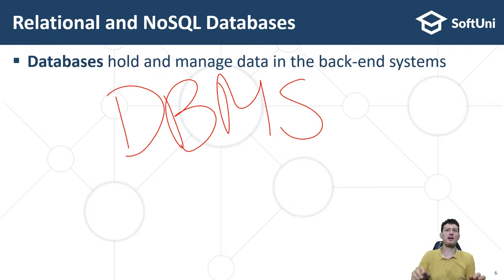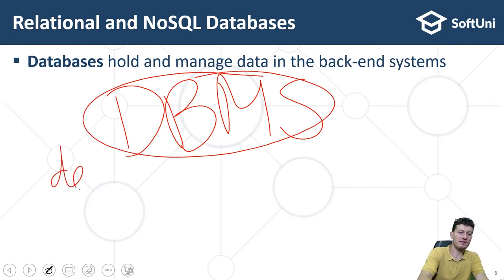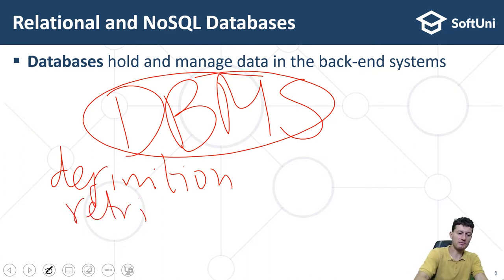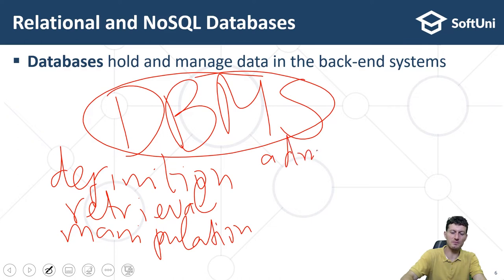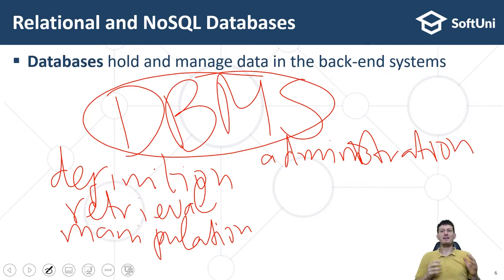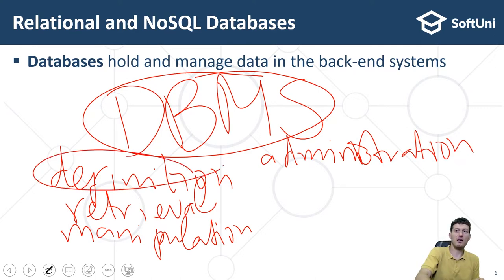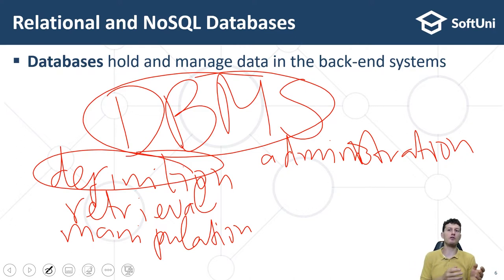DBMS systems are responsible for data definition — creating and deleting databases, creating and modifying collections, tables, or other sets of data records, and defining their structure, fields, and data format.